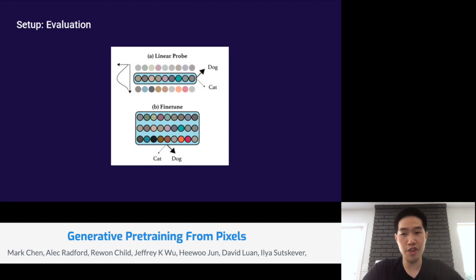In linear probing, we view our model as a feature extractor. For our setup specifically, we look at a particular layer, we look right after the layer norm in an attention block at that layer, we average pool across context, and then we use these as features for training a logistic regression classifier.